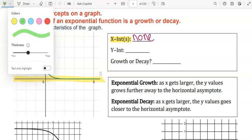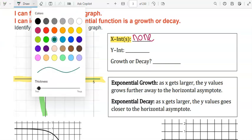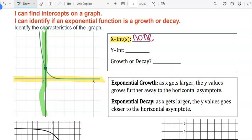And then for the y-intercept, that's when it crosses the y-axis. It appears to cross right here. So that's at 1. Our y-intercept is 0 comma 1.